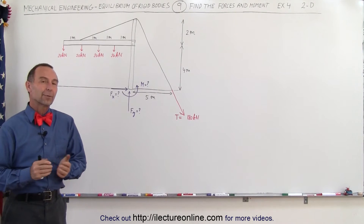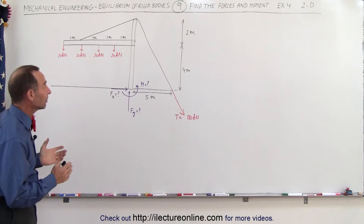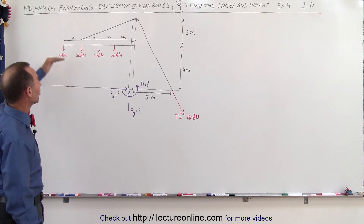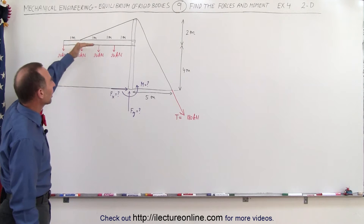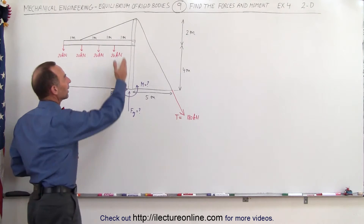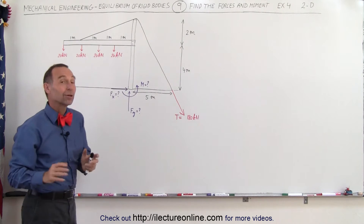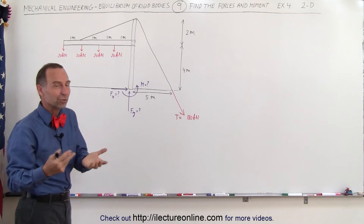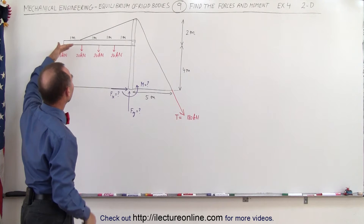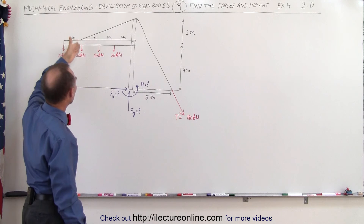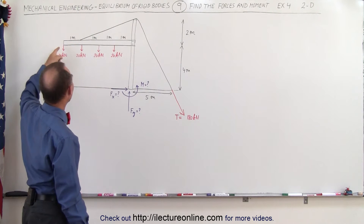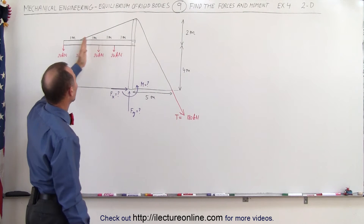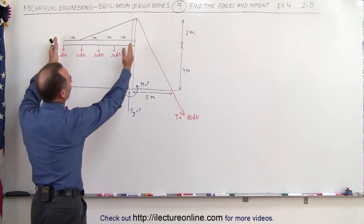Welcome to our lecture online. Here we have another example of how to calculate the forces and the moment in a situation like this. Assume that this is like a roof of a stadium or a shed being held up by a post. The weight of the roof is indicated at various points along the roof to be 20 kilonewtons, spaced 1 meter apart for a total distance of 4 meters.